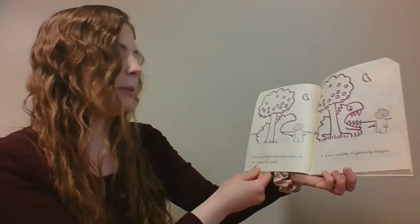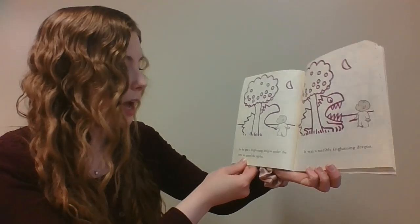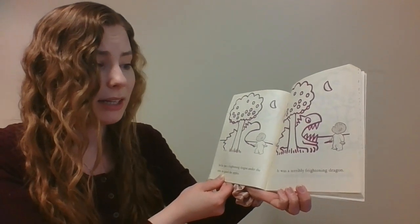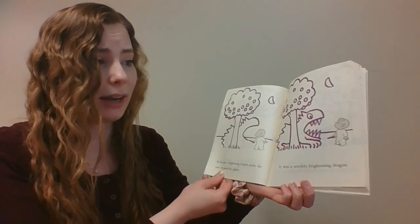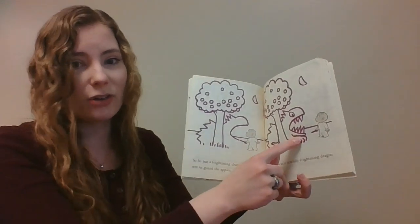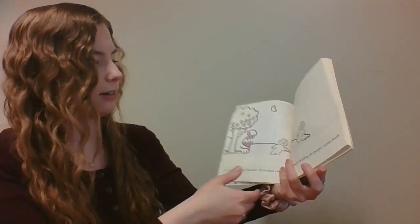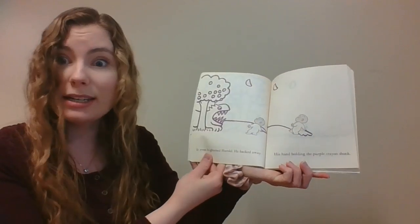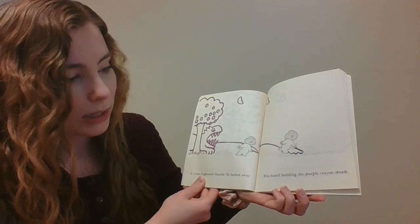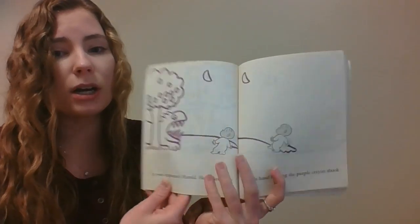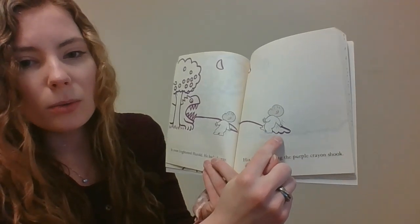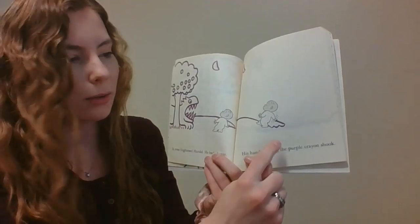So he put a frightening dragon under the tree to guard the apples. It was a terribly frightening dragon. It's kind of a scary dragon. It even frightened Harold. He backed away, his hand holding the purple crayon shook. What's happening? What do you think is going to happen? Because his hand is shaking, you see.